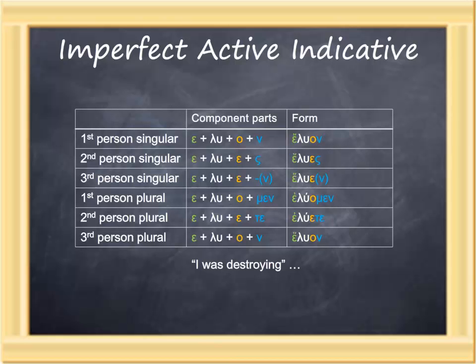So, the first person singular: eluon, I was destroying. Elues, you singular were destroying. Elue or eluen, he, she, or it was destroying. First person plural: eluomen, we were destroying. Eluete, you plural were destroying. Eluon, they were destroying. Again, notice that first singular and third plural are identical in form.